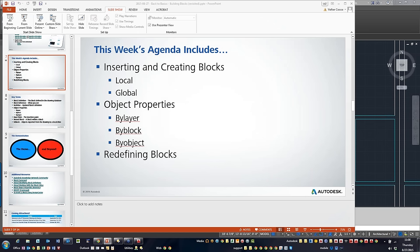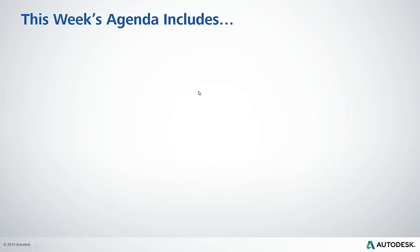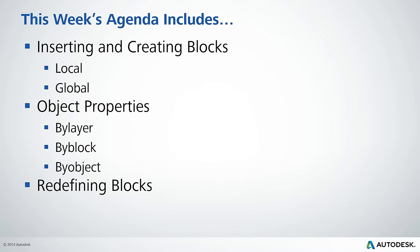In this week's agenda, we're going to be talking about inserting and creating blocks. We have two types of blocks. Local blocks are the blocks you would have within an AutoCAD drawing. Then we also have what are called global blocks — basically any drawing file you have on your hard drive, network, or external storage device that can be used within an AutoCAD drawing. We're also going to talk about object properties by layer, by block, by object, and redefining blocks — which is just updating any block already within your drawing.